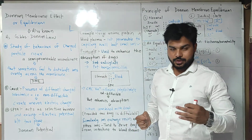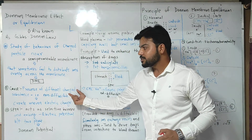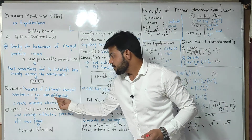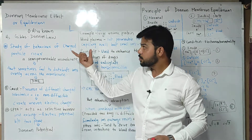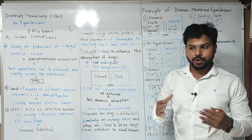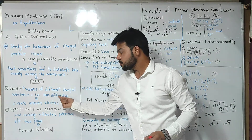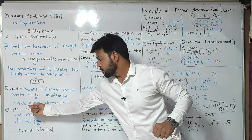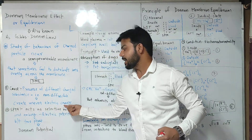Now, what is the cause of this uneven distribution of ions? This is because of the presence of different charged substances — specifically non-diffusible ions. As we all know, Donnan Membrane Equilibrium is also an electrical property of colloidal dispersion. Colloids are charged particles and they are non-diffusible to the membrane. The principle of their charged behavior is used to enhance the absorption of drug substances. The presence of these colloidal or charged non-diffusible particles creates an uneven electric charge.